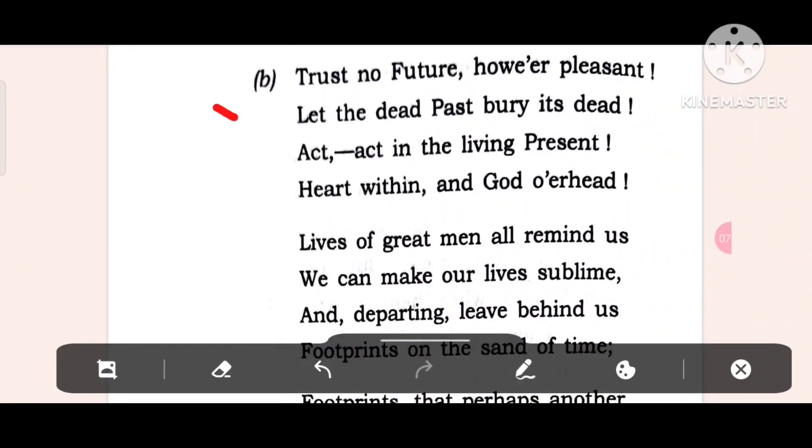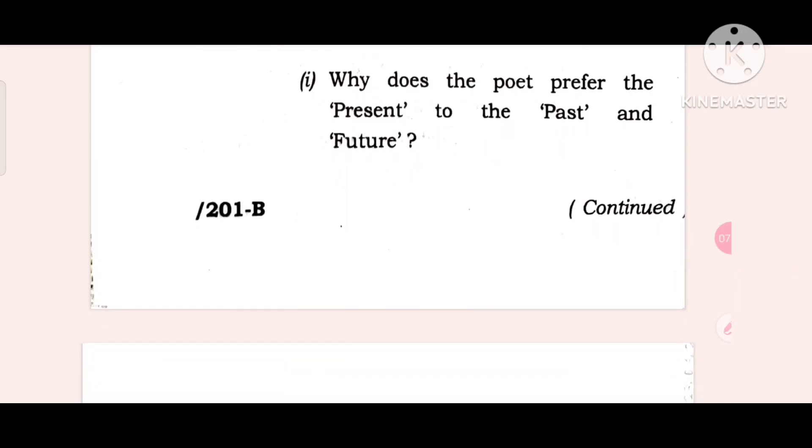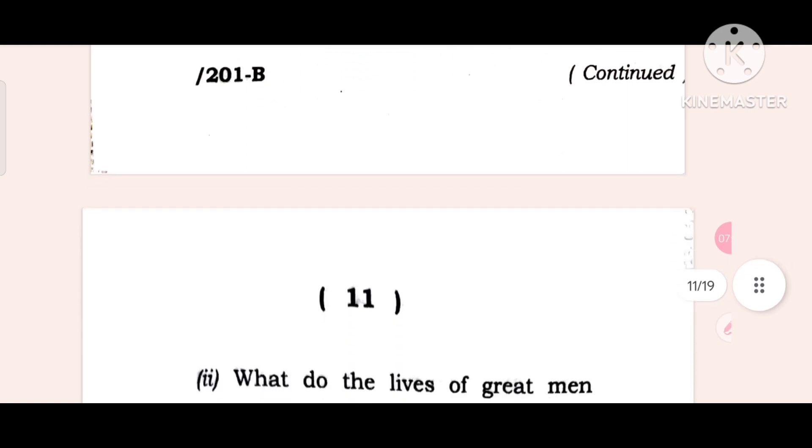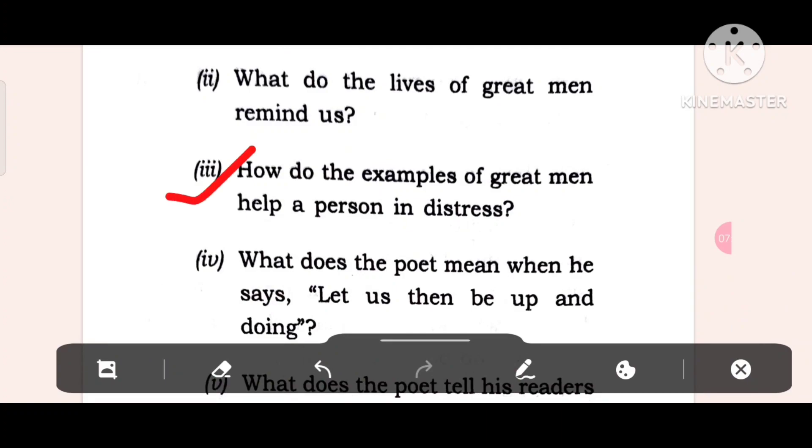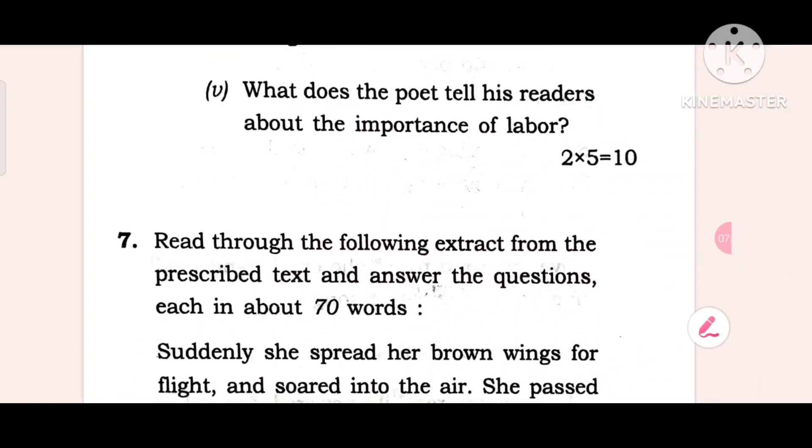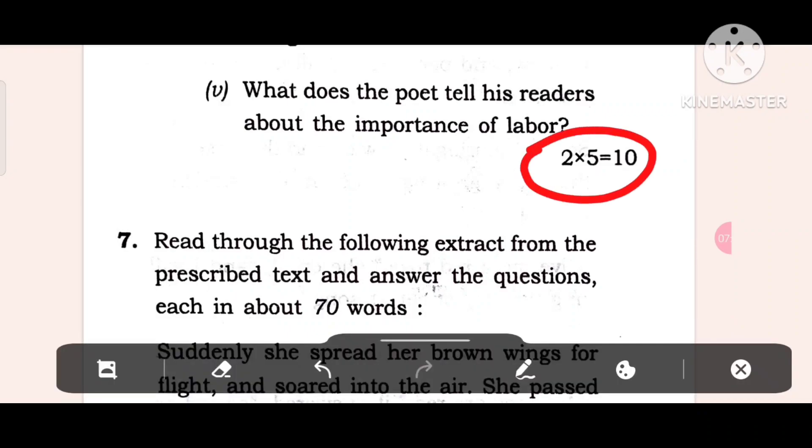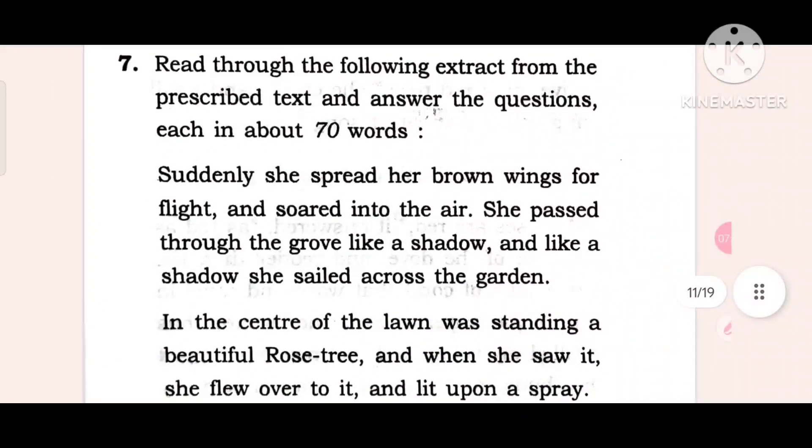Another passage: 'Trust no future however pleasant, let the dead past bury.' This is from 'A Psalm of Life' poetry. Five questions again, ten marks. Look at this: Why does the poet prefer the present to the past and future? What do the lives of great men all remind us? How do the examples of great men help the person in distress? What does the poet mean when he says 'let us then be up and doing'? What does the poet tell his readers about the importance of labor? Learn to labor and to wait. Two marks each question, ten marks total.